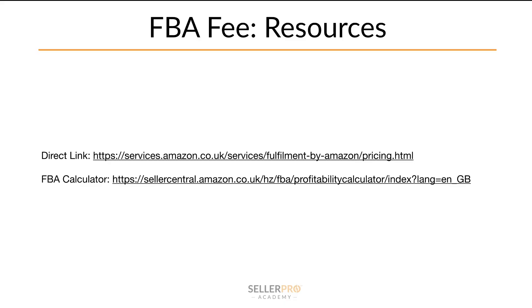If you want that information directly, please go to the link in the description. If you search 'FBA fees by Amazon,' it's their main page — very easy to find, all the information is on one page. The direct link is amazon.co.uk/services/fulfillment-by-amazon-pricing. You can also go to the FBA calculator — search 'FBA calculator' for your country in Google and it'll bring up the profitability calculator. You put in the price of the product and your cost, and it will spit out the FBA fee and everything else. Really cool piece of software.